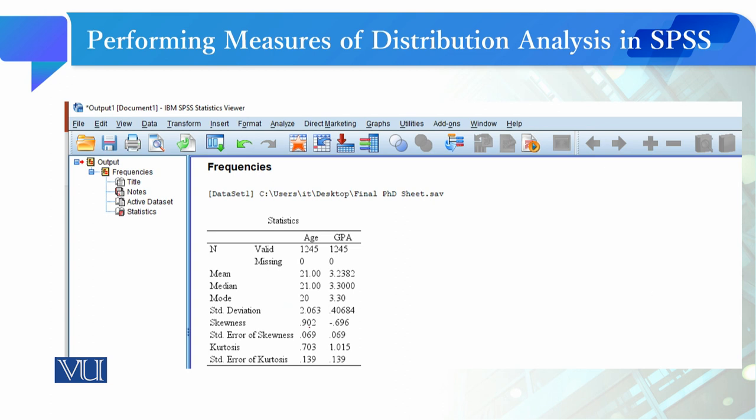Then you have the results showing mean, median, mode, standard deviation, skewness, and kurtosis. The skewness value is 0.902.